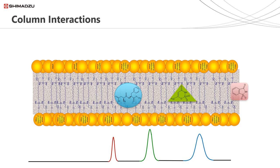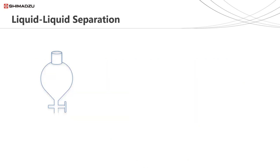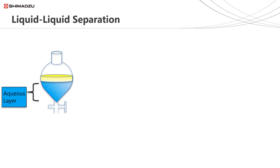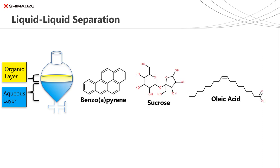The separation of analytes by HPLC depends on the interaction of analyte molecules with the stationary phase and the mobile phase. To think of this in a different way, let's consider what is happening in a liquid-liquid separation. If we take a separating funnel and fill it with an aqueous solution and an immiscible organic solvent, then we create two layers. If we then introduce a number of different compounds, shake and allow the two layers to settle back out again, depending on the nature of each compound, we would find a higher concentration of each one in either the aqueous layer or the organic layer.